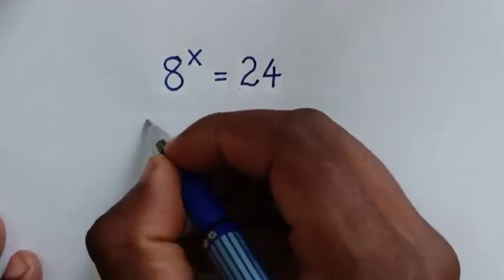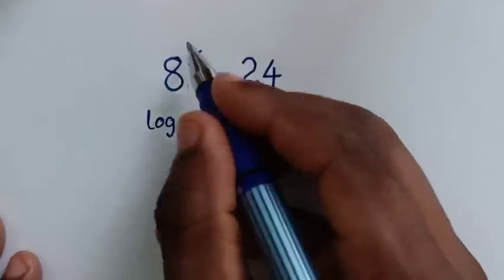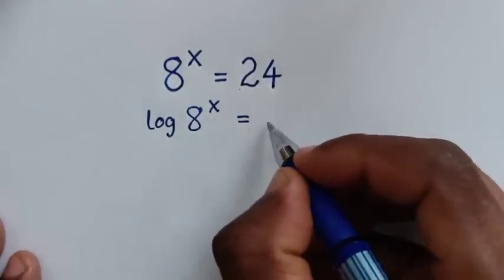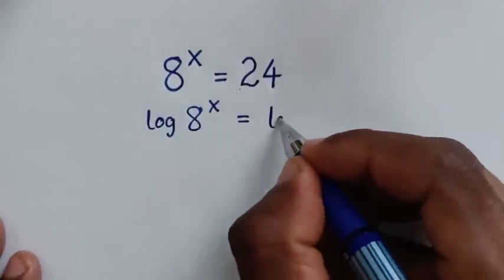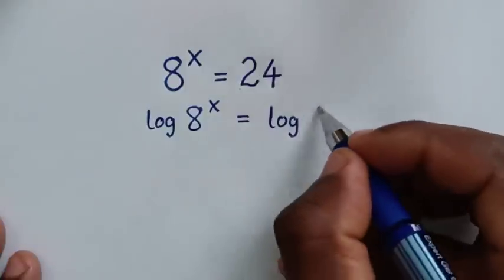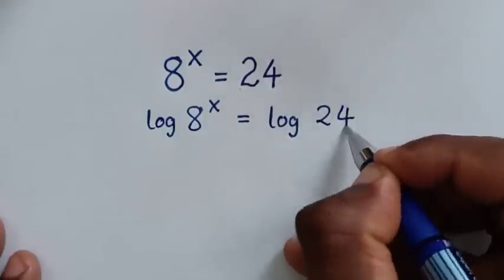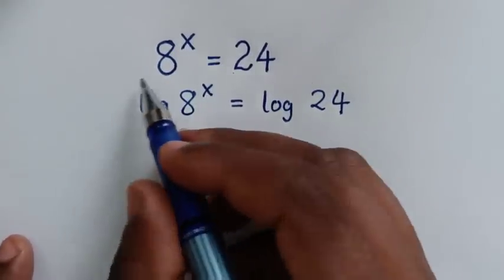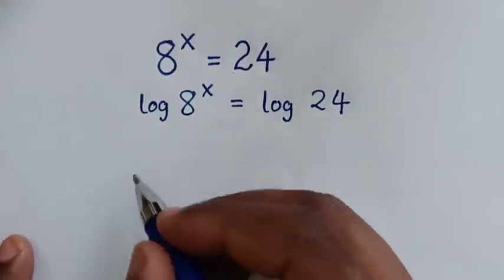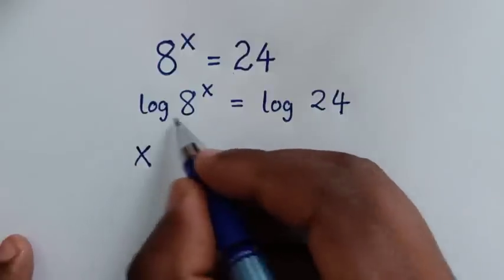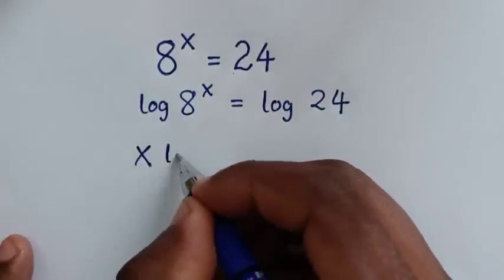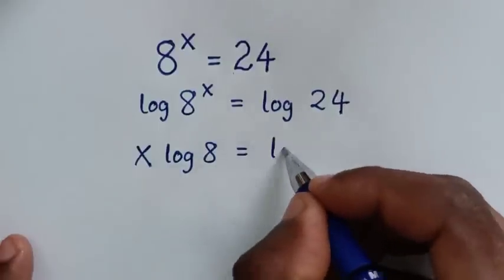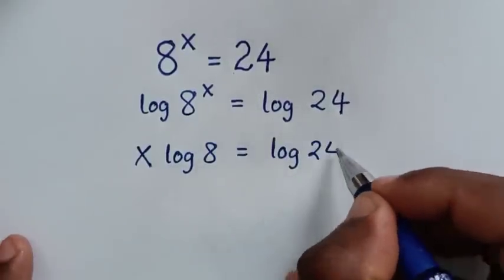So it will be log of 8 to the power of x is equal to log of 24. Then this power of x will move to the base, so it will be x times log of 8 is equal to log of 24.